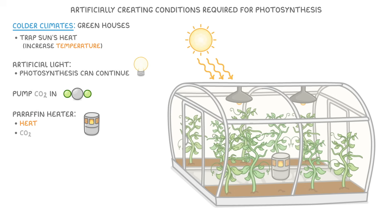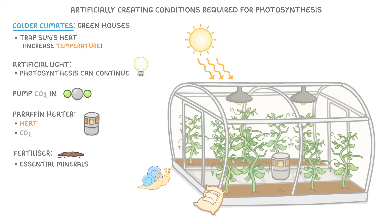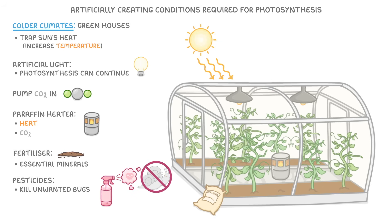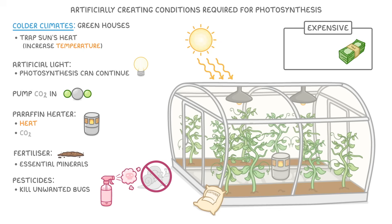Another benefit of greenhouses is that they're enclosed, so pests and pathogens can't get to the plants as easily. In addition, farmers may also use fertilisers to ensure that the plants have enough essential minerals, and pesticides to kill any unwanted bugs. As you can imagine, everything discussed here can cost a lot of money, so farmers have to weigh up this extra cost versus the extra yield they'll hopefully get from their crops.